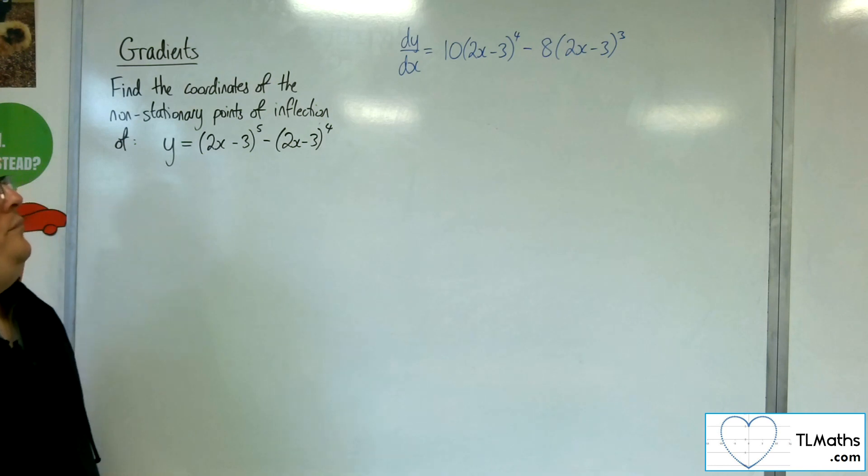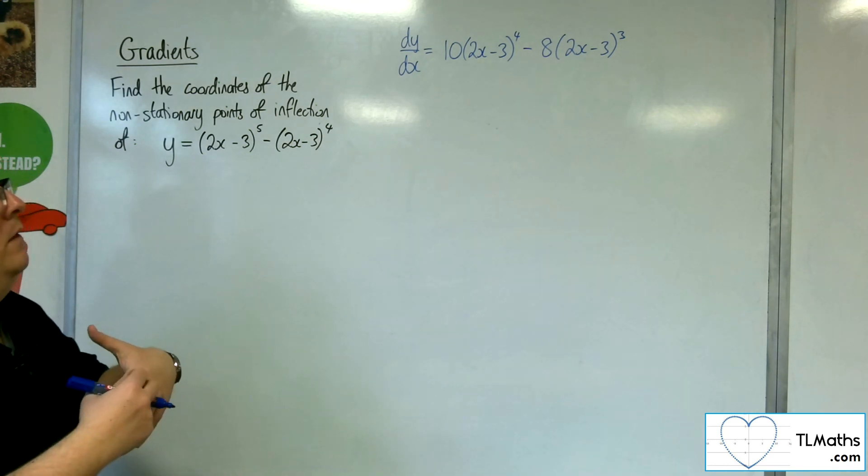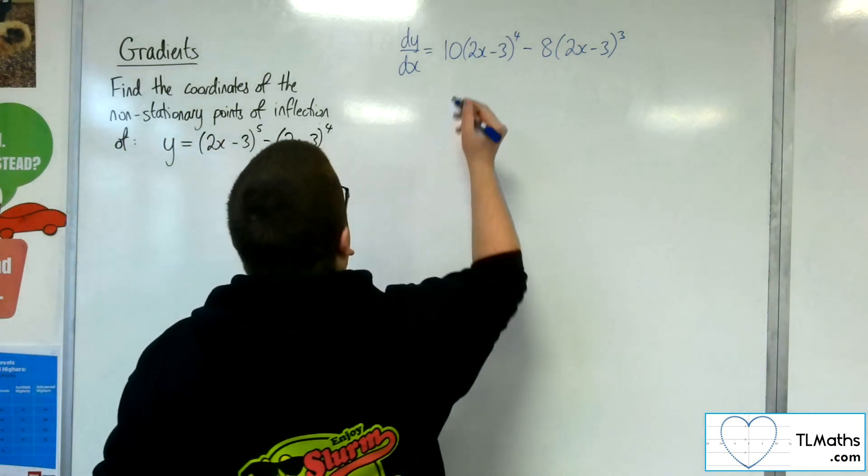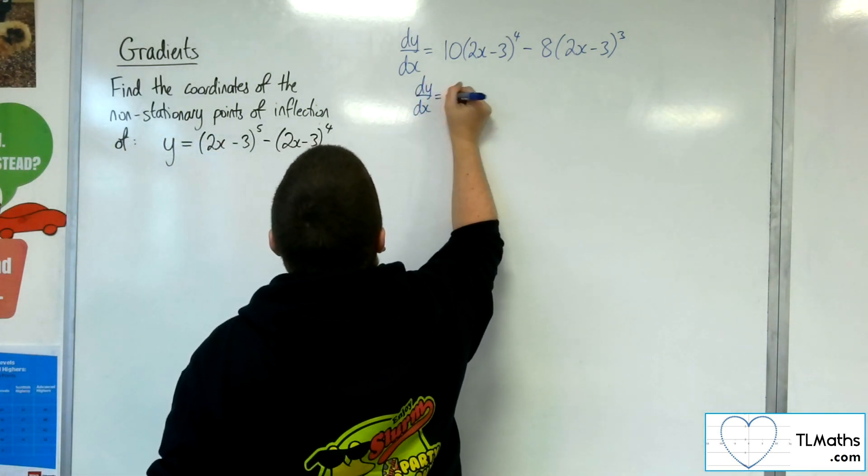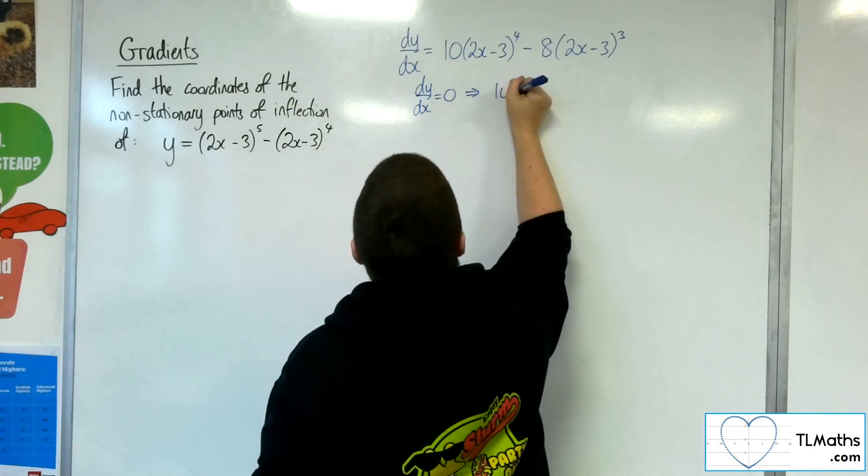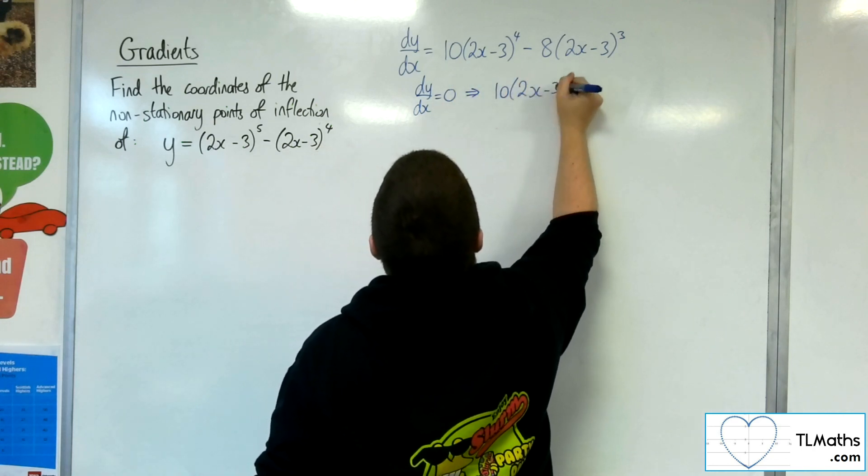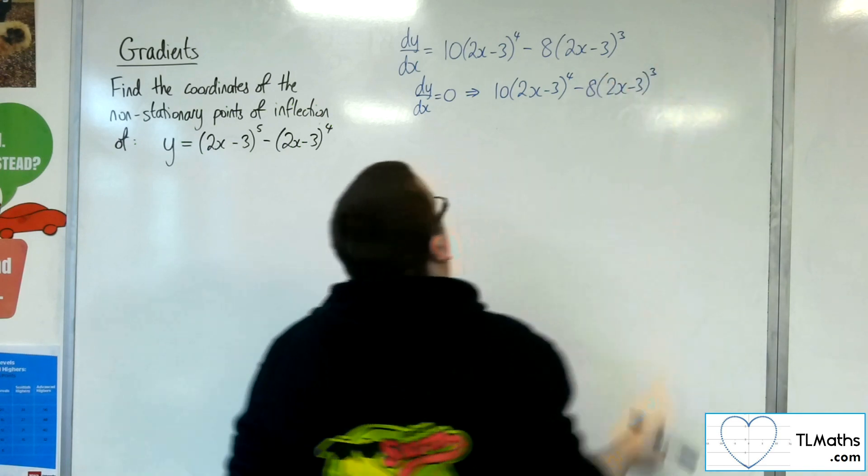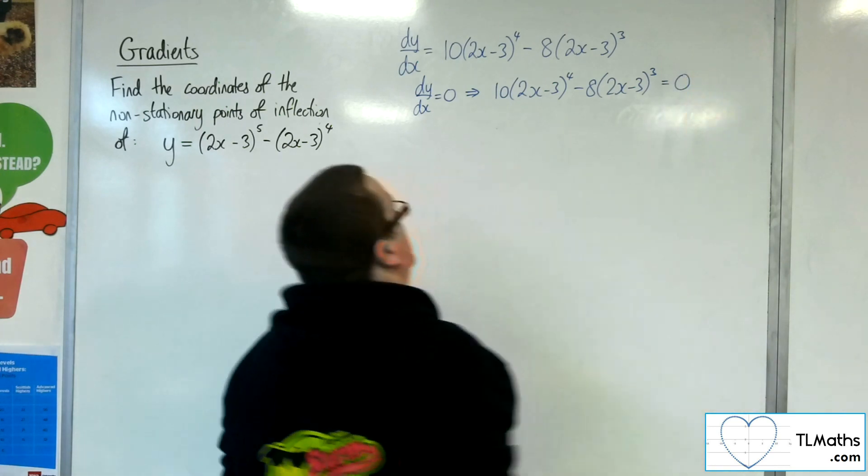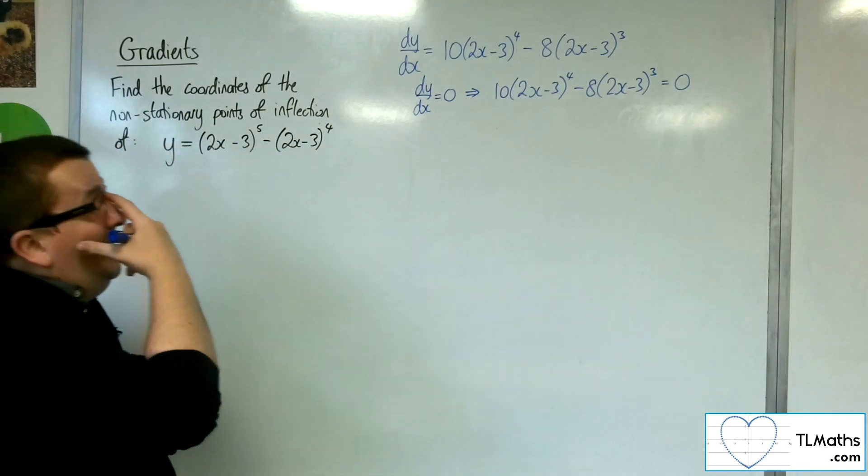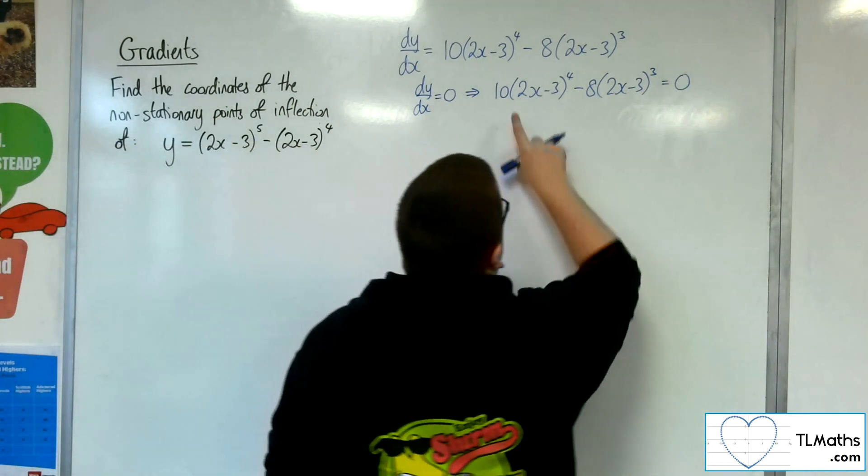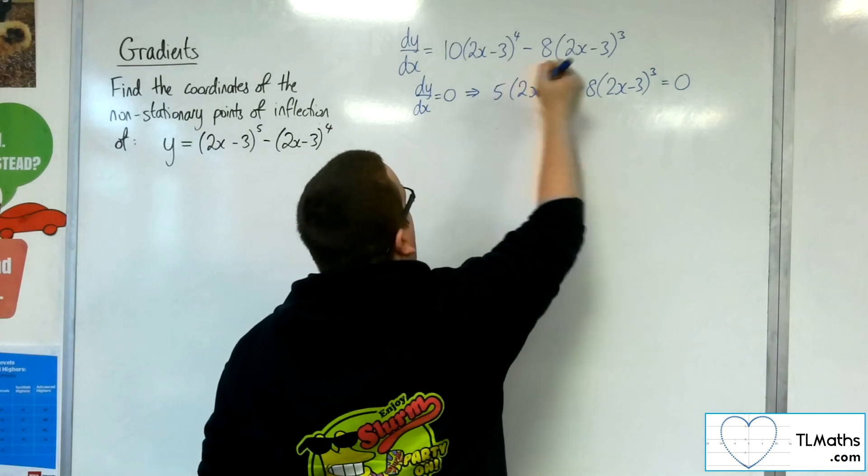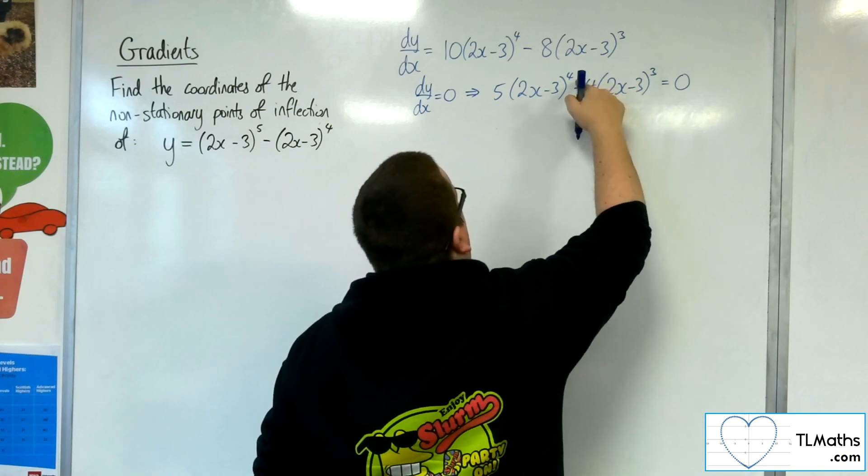So we're going to want to find the stationary points for this. Putting dy by dx equal to 0, we want to solve this equation. So we'd want to divide through by 2 to start off with, so I'm going to reduce it down to that to start off with.